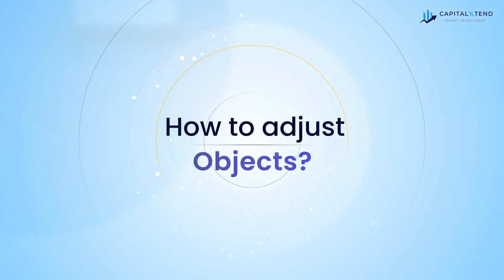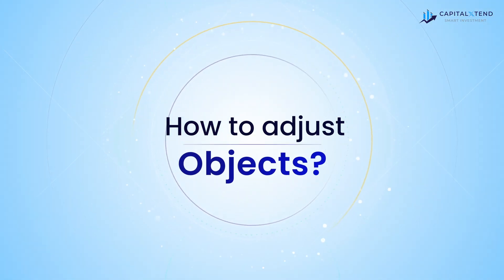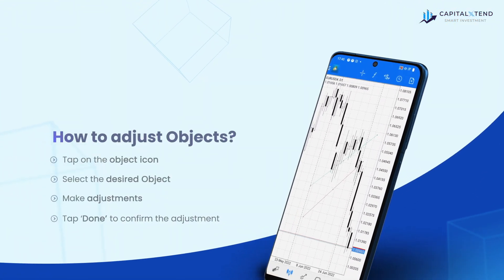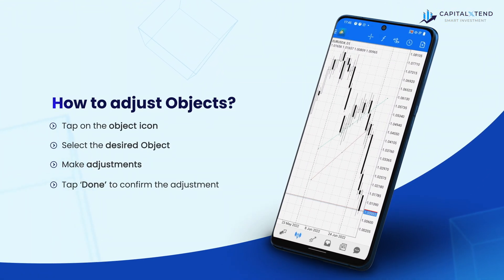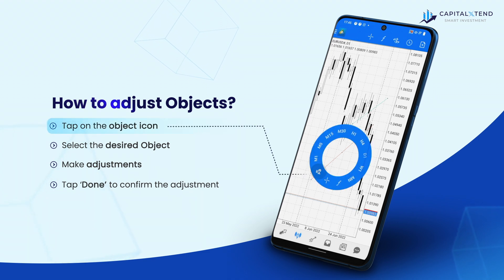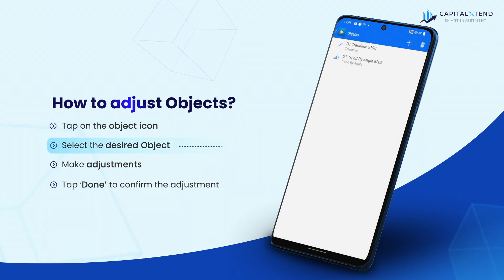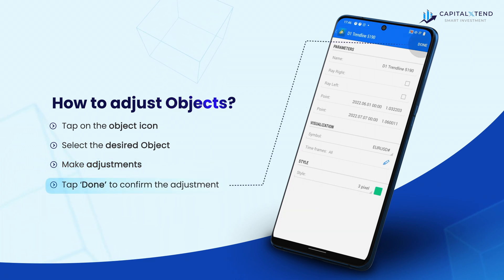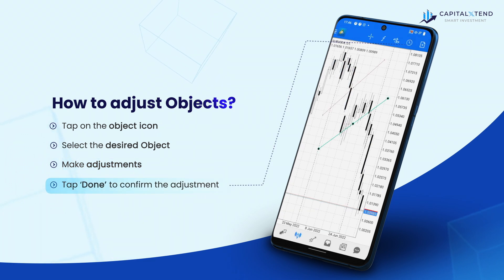Let's see how to adjust objects. You can adjust the parameters of your object by dragging it on the chart screen. Tap on the object icon and then tap on the desired object and proceed with the adjustments. Once you have finished, tap done to confirm the adjustment.